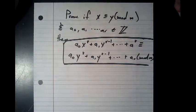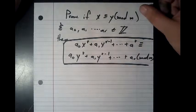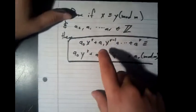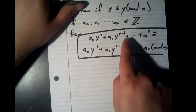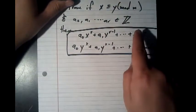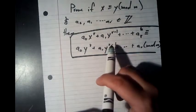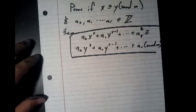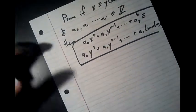And the second problem we're going to solve is this one. So it says prove that if x is congruent to y modulo m and a_0, a_1, dot dot dot all the way to a_r are all integers, then a_0 x^r plus a_1 x^(r-1) plus dot dot dot a_r is congruent to a_0 y^r plus a_1 y^(r-1) plus dot dot dot a_r modulo m. So it's a long statement, but it's very easy to solve. So let's just write it in the form that we always write it in.